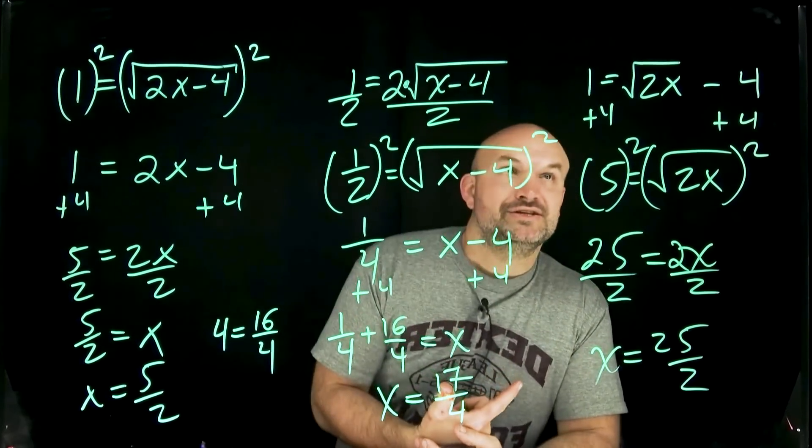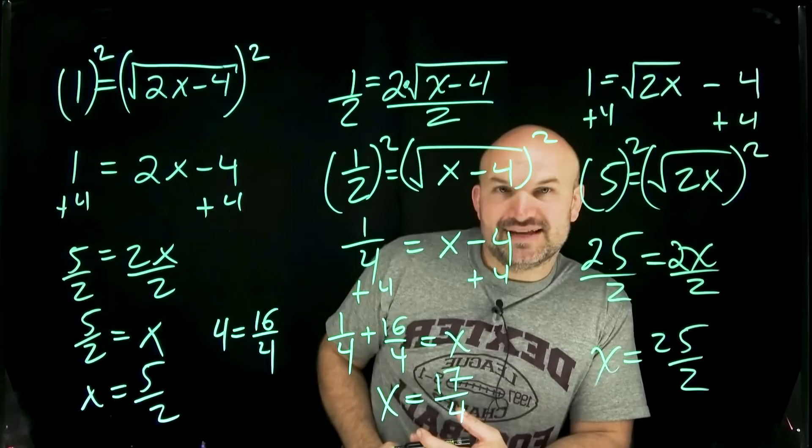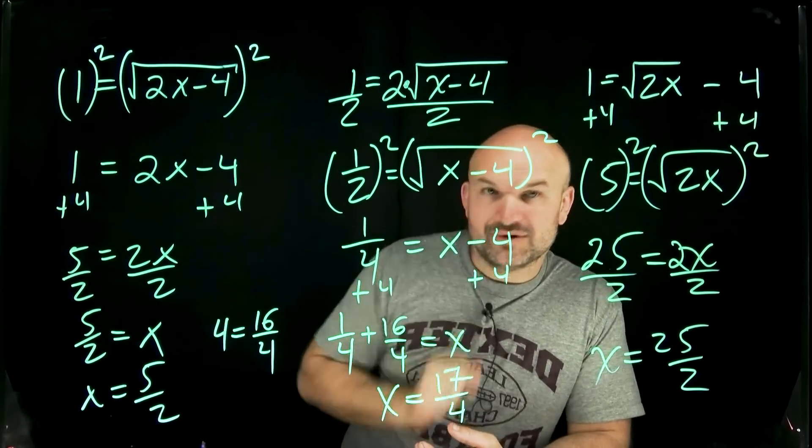Now the one question you might be asking yourself is well what about if you have a 2 and a 4 on the outside? What would that equation look like? That will come up in the next video.